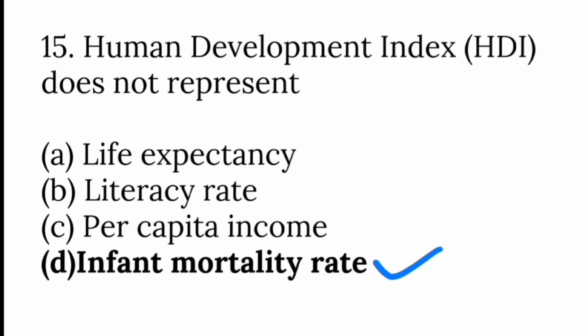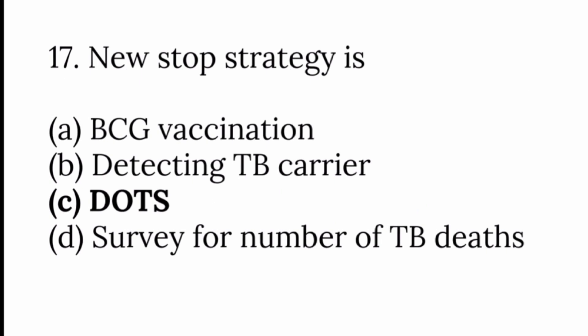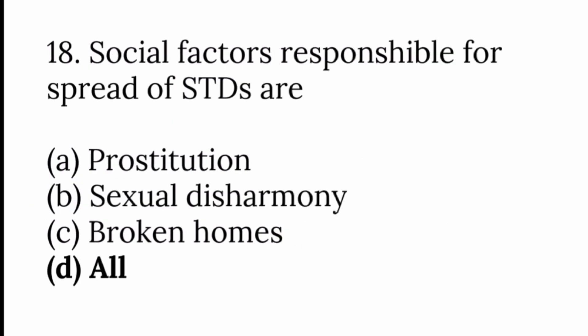The causative organism of genital herpes is herpes simplex virus. The DOTS strategy for tuberculosis is associated with the STOP TB strategy. Social factors responsible for the spread of sexually transmitted diseases are prostitution, sexual disharmony, and broken homes — so the answer is all of the above.